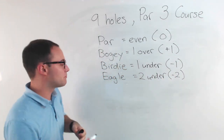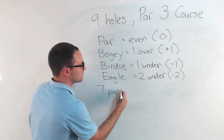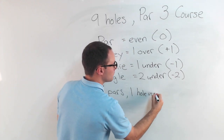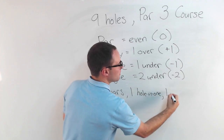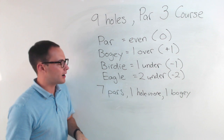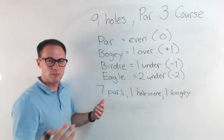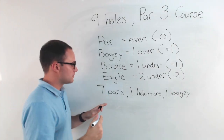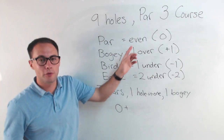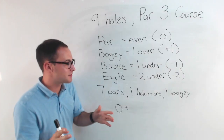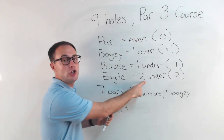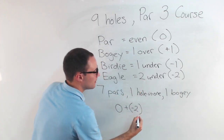On my round, I had seven pars, one hole-in-one, and one bogey. So the question is: what's my overall score relative to par? Seven pars — a par is even with a value of zero — so seven of them would still be zero. Plus a hole-in-one: on a par three course that means I got it in one shot, which was an eagle, two under. So I'm going to add negative two.